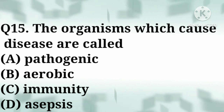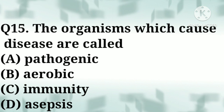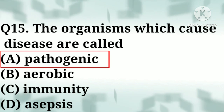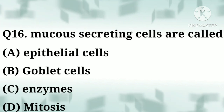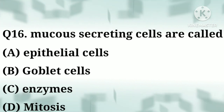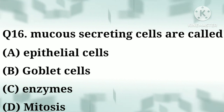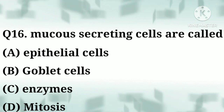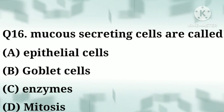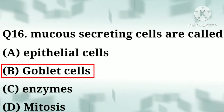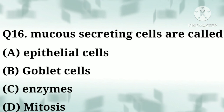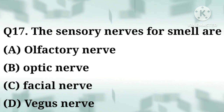Correct answer: option A, pathogenic. Question number sixteen: mucus-secreting cells are called — option A: epithelial cells, option B: goblet cells, option C: enzymes, option D: mitosis. Correct answer: option B, goblet cells.